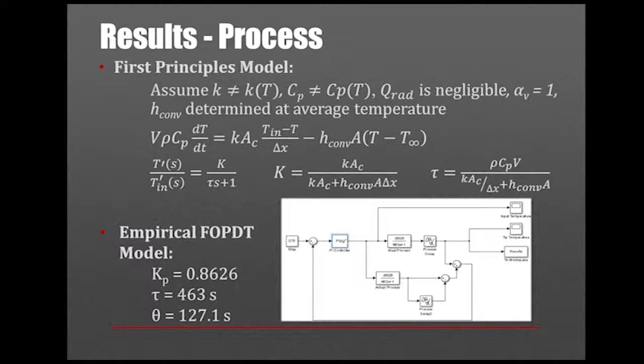We get the following energy balance for each disc, where T is the temperature of the disc and Tn is the temperature of the disc above or the source. Linearizing it and taking Laplace, we get the transfer function in standard form with k and tau as a function of our process parameters.